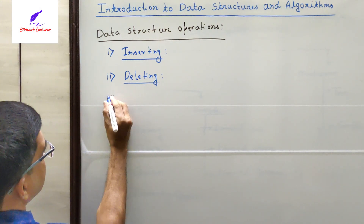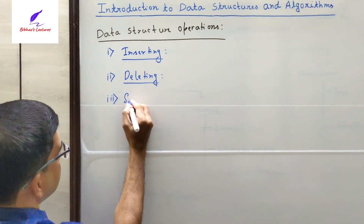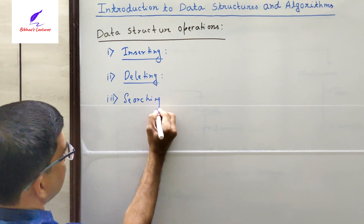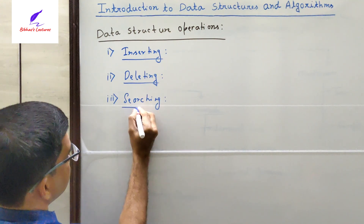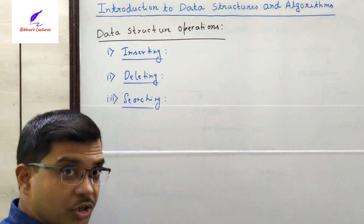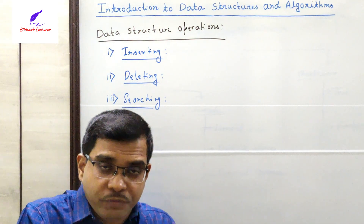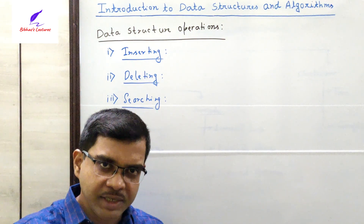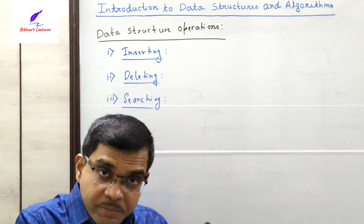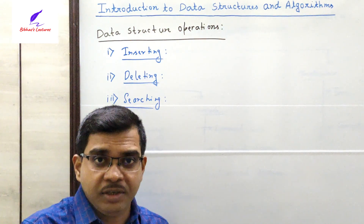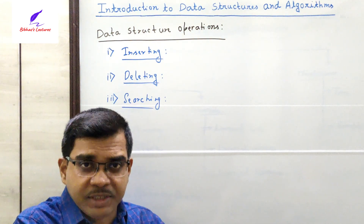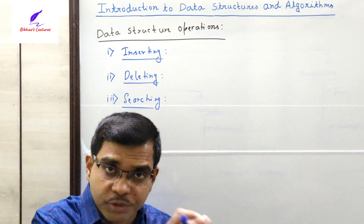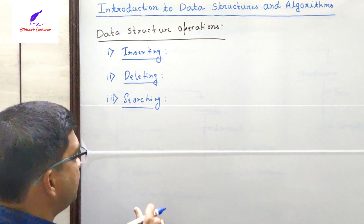The next operation is searching. Searching operation means we are going to find out whether a particular element or record is present in the structure or not. If the element we are searching for is present in the structure, then it will be a successful search; otherwise it will be an unsuccessful search. This operation is called the searching operation.